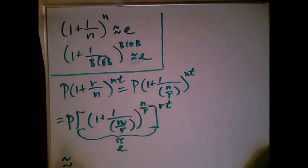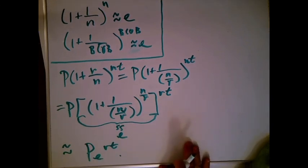And so the whole thing is getting close to P and then there's the E being raised to the RT. Ta-da! And that is where the PERT formula comes from. Not a big deal. It just comes from rewriting and knowing the definition of E.